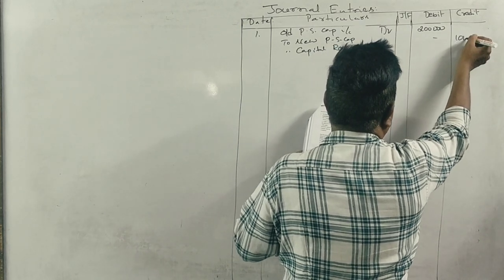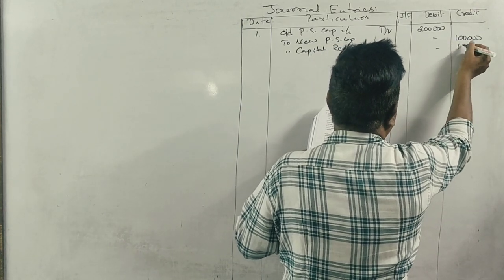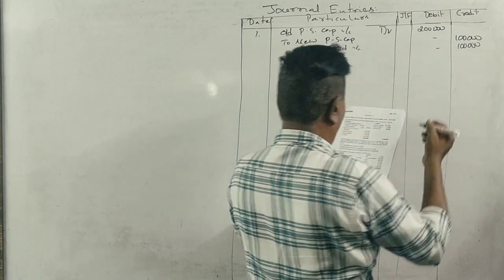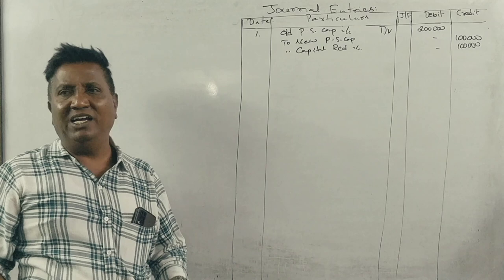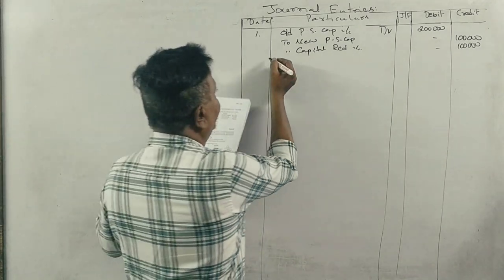If preference shares are 1 lakh, you reduce it to 50,000. That's why 1 lakh debit, 50,000 credit to new preference share capital, 50,000 to capital reduction account.